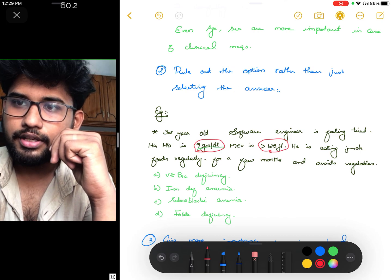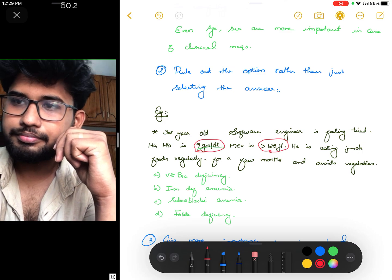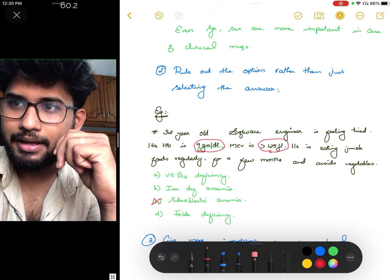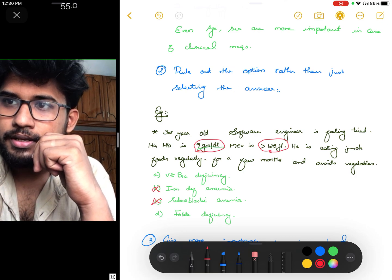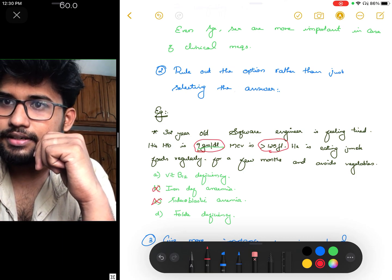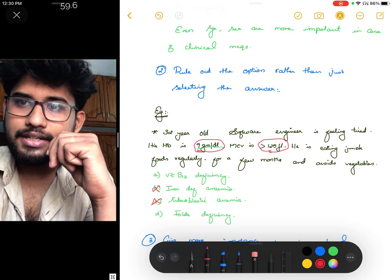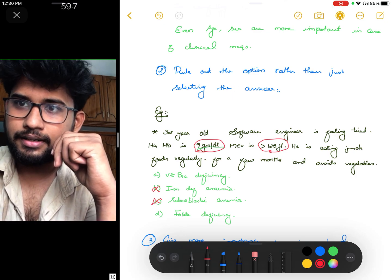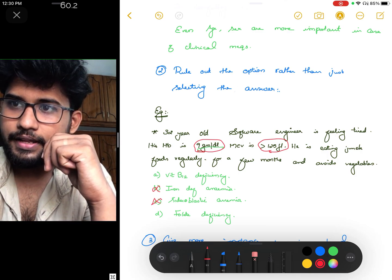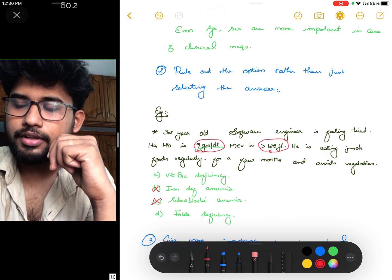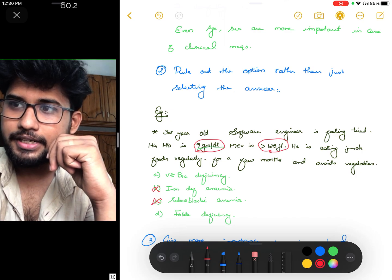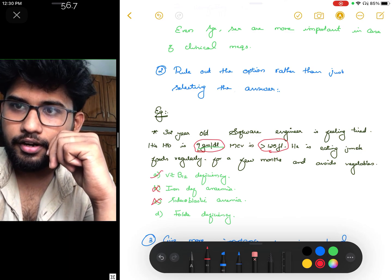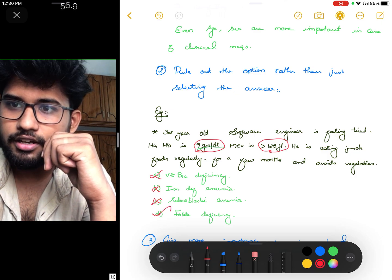So you can rule out the options like sideroblastic anemia can't be the answer, and iron deficiency anemia also cannot be the answer because it is a macrocytic anemia. We are stuck with two answers. If you read further, he is eating junk foods regularly for a few months and avoids vegetables. We have a tendency to mark vitamin B12 deficiency, but it is not the answer. Since he is avoiding vegetables and folate is rich in vegetables, vitamin B12 cannot be the answer. The correct answer will be folate deficiency.